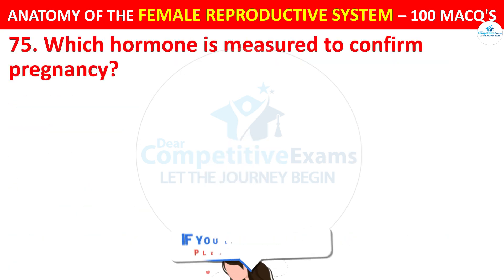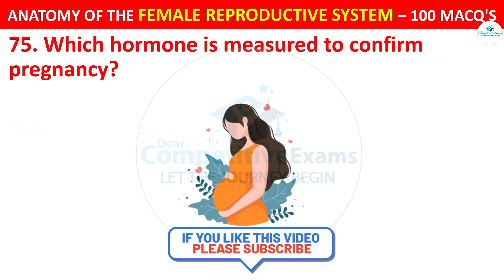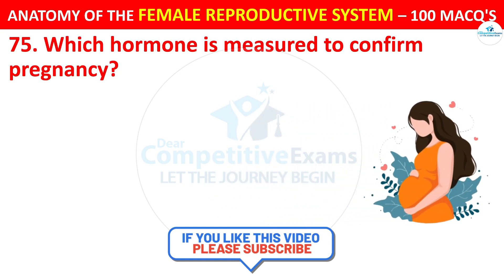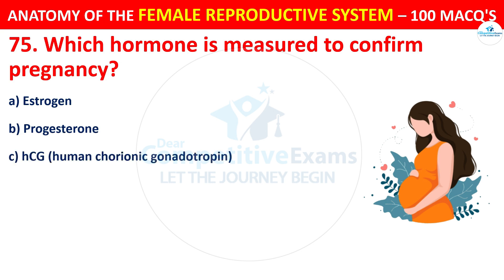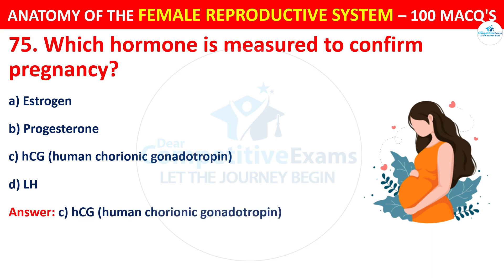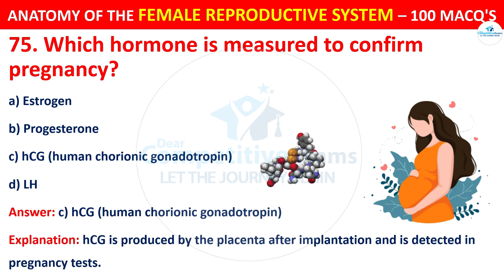Question number 75. Which hormone is measured to confirm pregnancy? Options: estrogen, progesterone, or HCG. The correct answer is C — HCG, known as human chorionic gonadotropin. HCG is produced by the placenta after implantation and is detected in pregnancy tests.